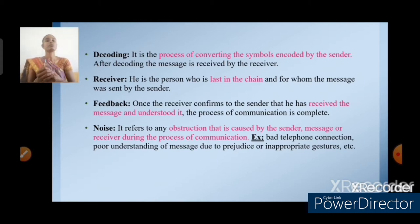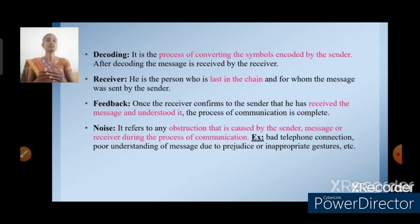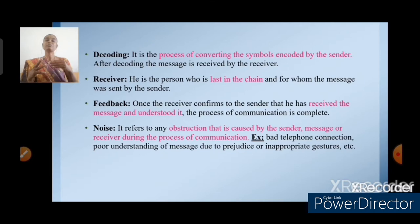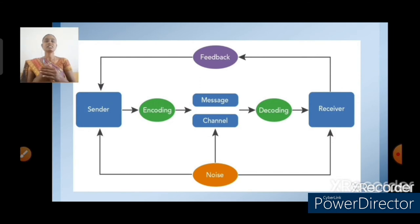Receiver — the receiver is the last person in the chain, the one to whom the message was sent by the sender. Next, feedback — once the receiver confirms to the sender that they have received and understood the message, this completes the feedback process. Next, noise — noise is an obstruction created in transmitting the message between the sender and receiver. For example, bad telephone connections or misunderstanding of a message due to prejudice or inappropriate context.